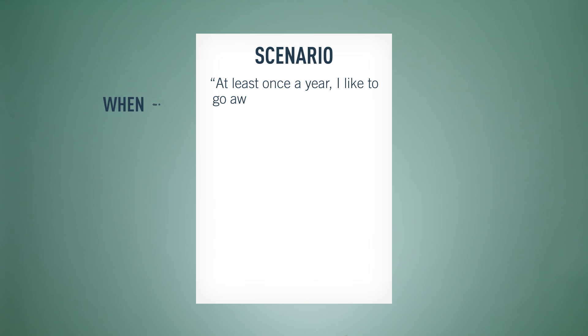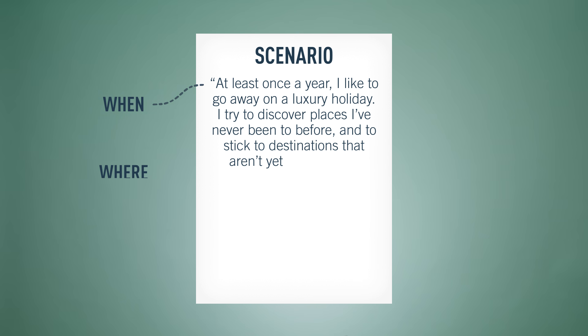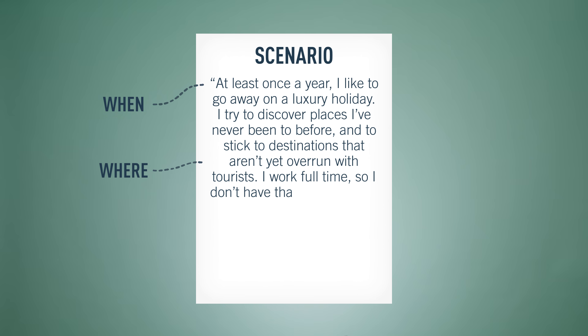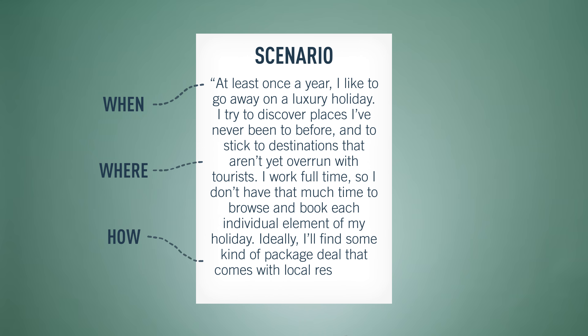The fourth and final step when defining a user persona is to add a scenario. A scenario is a day-in-the-life narrative that describes how your persona would interact with your product in a particular context to achieve their end goal. When writing a scenario, define when, where and how the narrative takes place and write it from the persona's perspective. For example, Savannah's scenario could start like this: 'At least once a year I like to go away on a luxury holiday. I try to discover places I've never been to before and stick to destinations that aren't yet overrun with tourists. I work full-time, so I don't have that much time to browse and book each individual element of my holiday. Ideally, I'll find some kind of package deal that comes with local restaurant recommendations.'